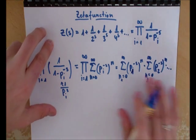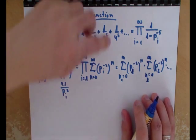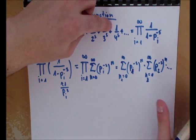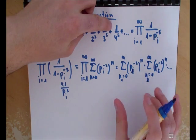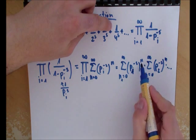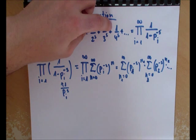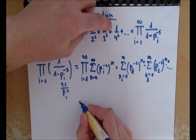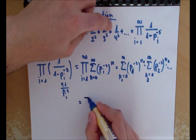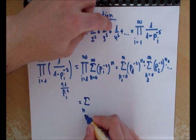We continue this with all the prime numbers that are in the product. Now you have a product of infinite sums, and one can actually take them together using these indices.